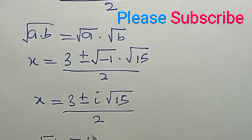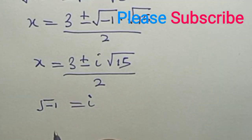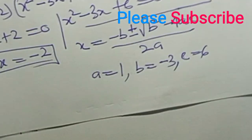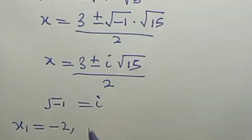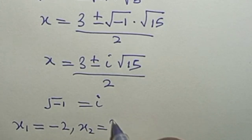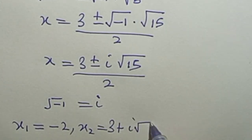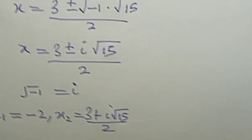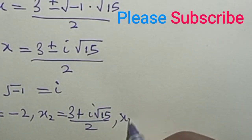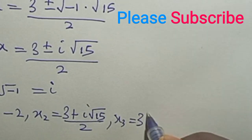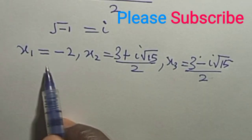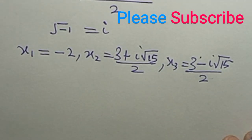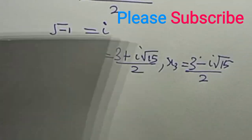So our three values of s are: s₁ = minus 2, s₂ = (3 + i√15) / 2, and s₃ = (3 − i√15) / 2. These are the three values of s that satisfy our original equation. Thank you for staying tuned.